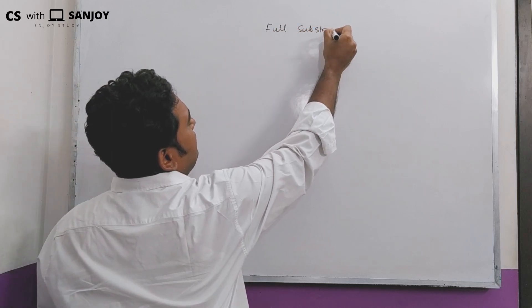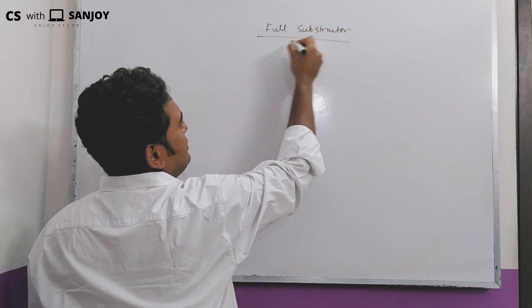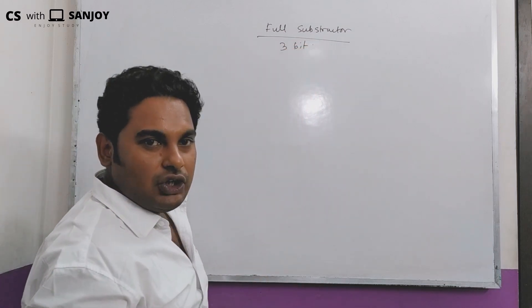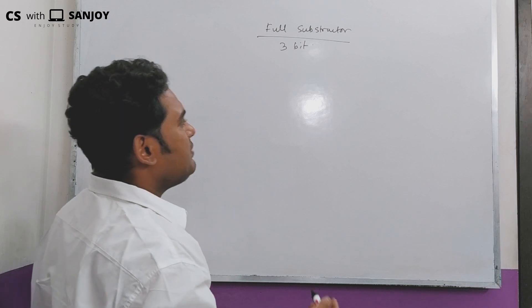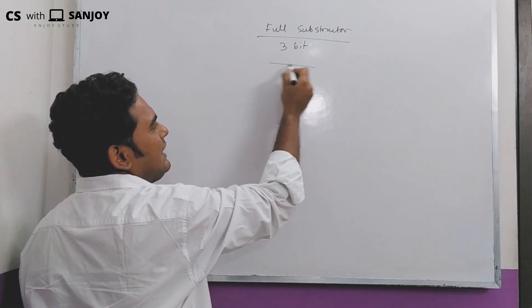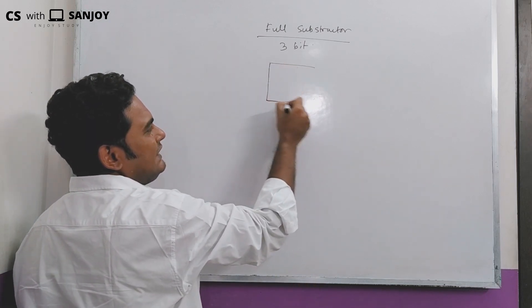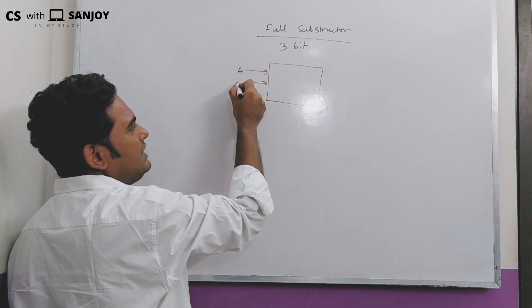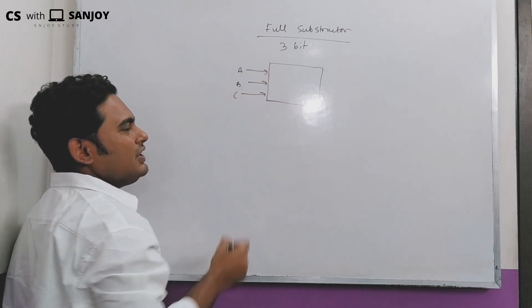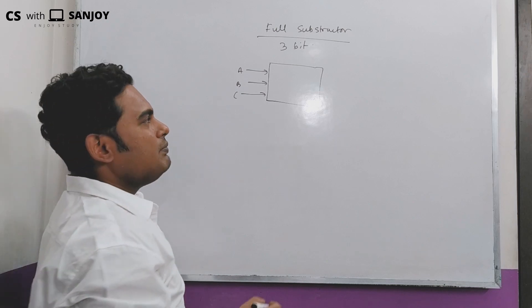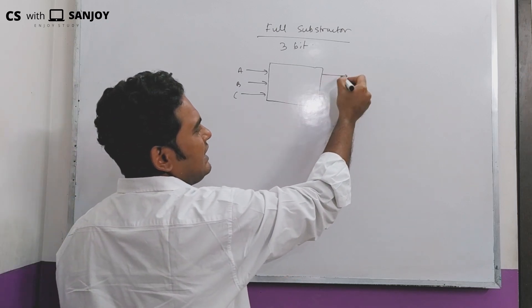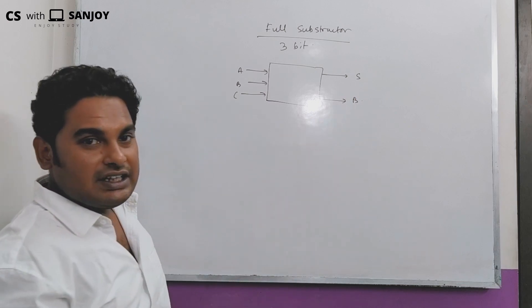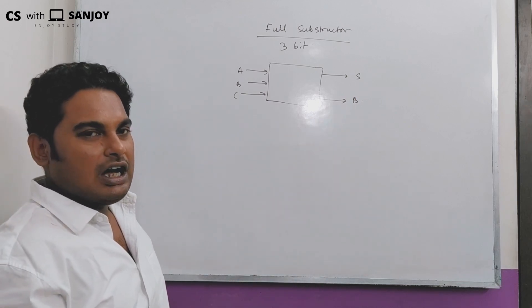A full subtractor is a 3-bit subtractor. A half subtractor is a 2-bit subtractor. So there are 3 inputs: A, B, and C.